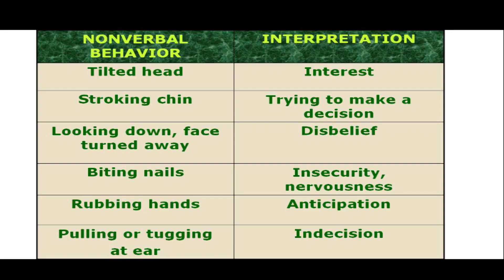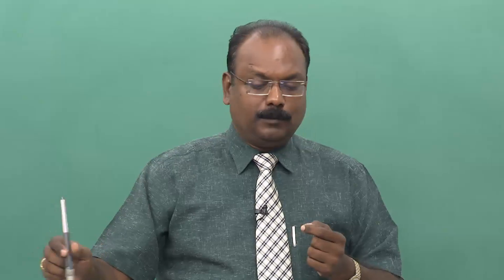You might have seen this with small children — as a parent or teacher you say, 'This weekend let us go for a picnic,' and immediately the children rub their hands: 'Oh wow, I am ready, where are we going?' Rubbing hands indicates anticipation. Pulling or tugging at the ear can mean indecision — the person is not able to decide on what you are telling them.